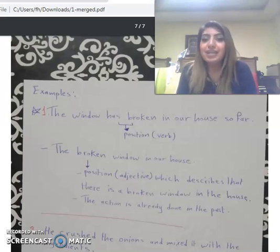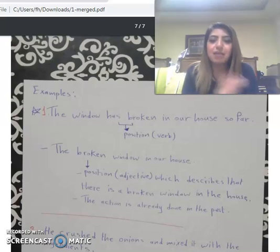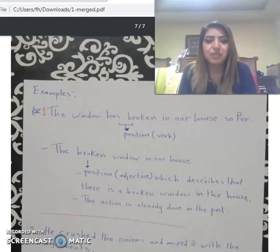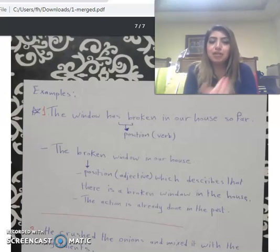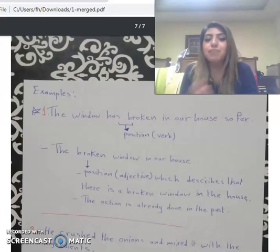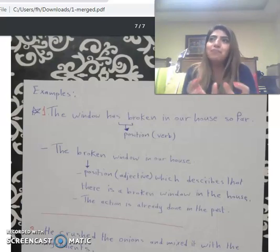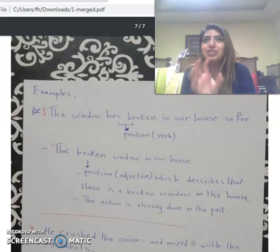'The window has broken in our house.' Here, 'broken' is a verb because it came after 'has' — this is the present perfect. But if we take 'broken' and use it as an adjective in a new sentence: 'the broken window in our house.' Here the position of 'broken' is an adjective, describing that there is a broken window in the house.